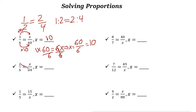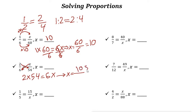Let's take a look at the next example. The first numerator 2 multiplied by the next denominator 54: 2 times 54 equals the next numerator times the first denominator, x times 6, which is 6x. Now if you solve for x — when you multiply 2 times 54 you get 108. So 108 divided by 6 is the answer. Dividing both sides by 6, x equals 108 divided by 6, which is 18.